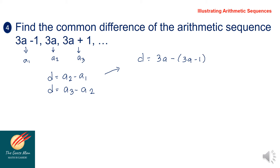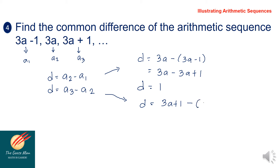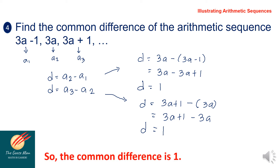Solving for the common difference using a₃ minus a₂: we have 3a plus 1 minus 3a. This simplifies to d equals 1. Therefore, the common difference is equal to 1.